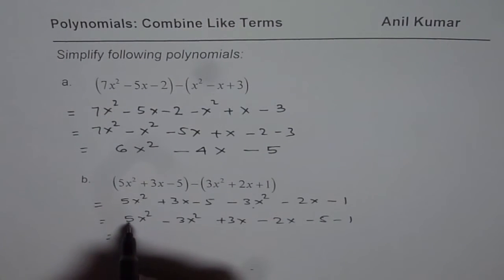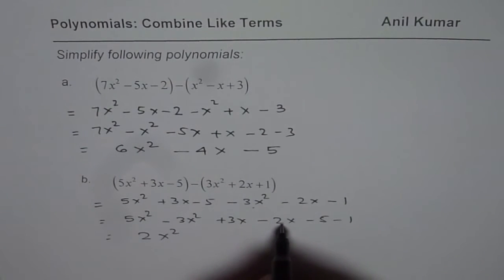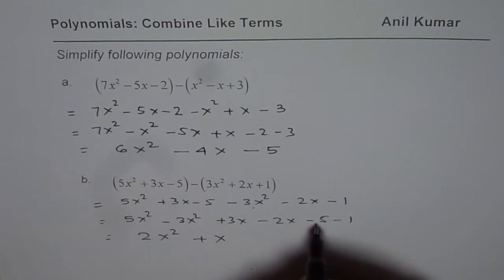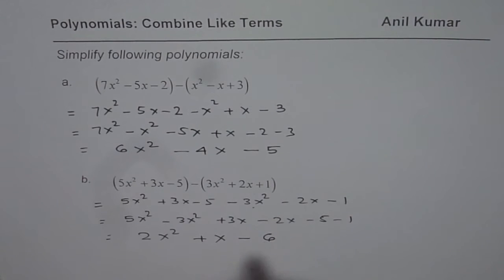Combine the like terms. 5 minus 3 is 2, 2x squared. 3x minus 2x is x. Do not write 1x. Just x is good enough. Never write 1 as a coefficient. Minus 5 minus 1 is minus 6. That becomes our answer.